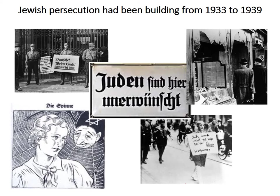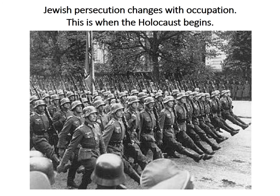At Kristallnacht, Jewish synagogues and businesses were burnt and smashed, and Jews were murdered. It's important that we understand that Jewish persecution was building through this period, because it changes and builds again from 1939 until 1945. That persecution changes as a result of occupation — when the Nazis occupied other countries. Jewish persecution changes with occupation, and this is when the Holocaust begins.